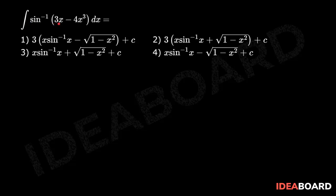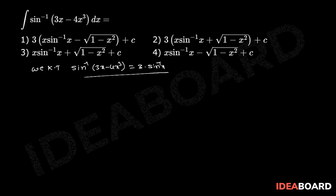We need to find the integration of sin inverse of (3x minus 4x cube) dx. We know the identity that sin inverse of (3x minus 4x cube) equals 3 times sin inverse of x.